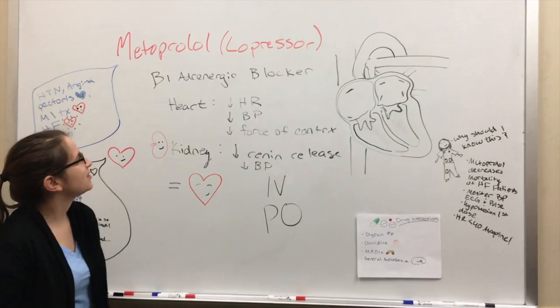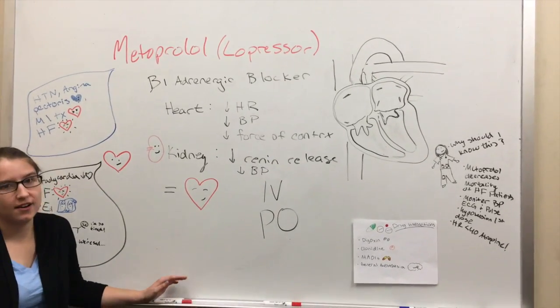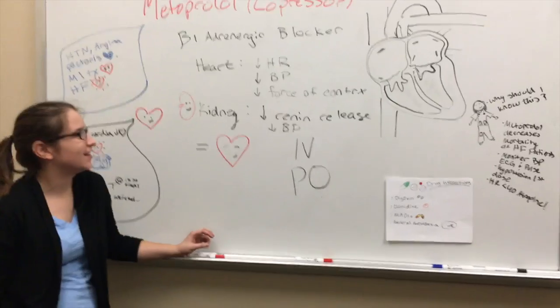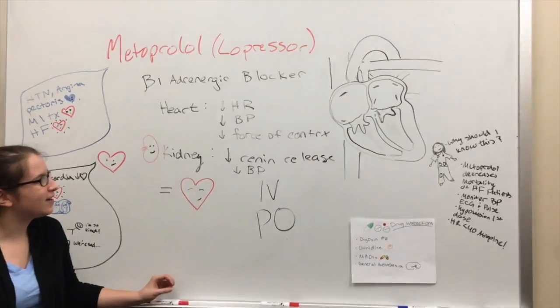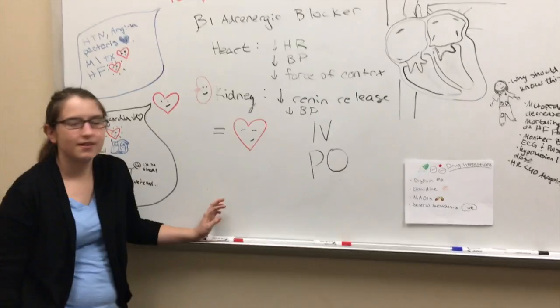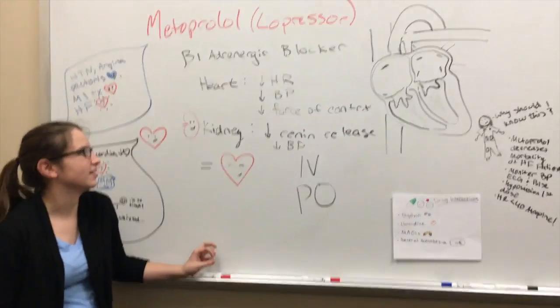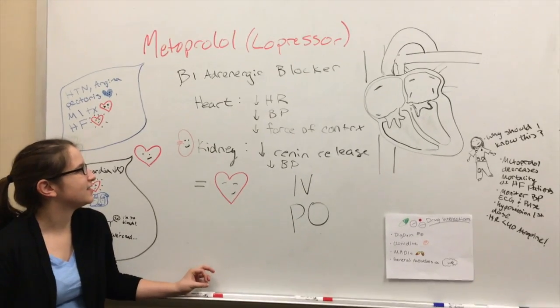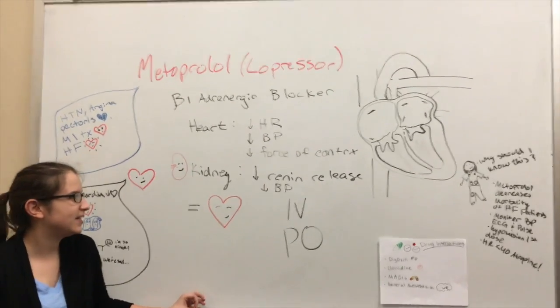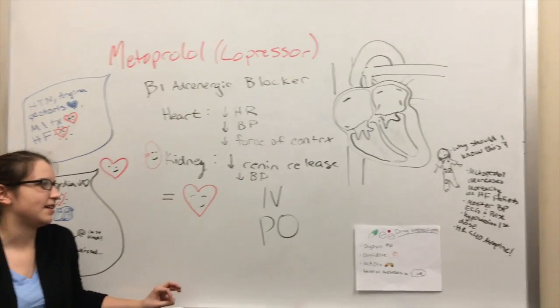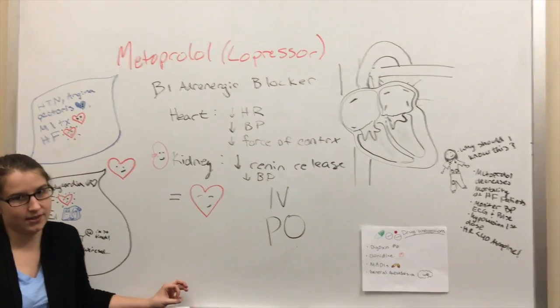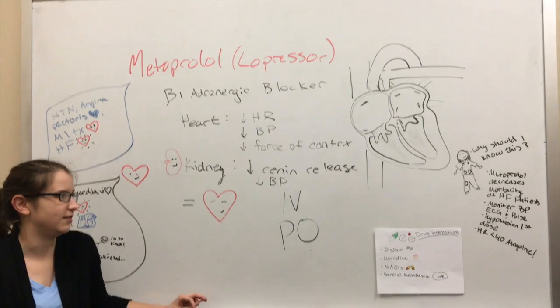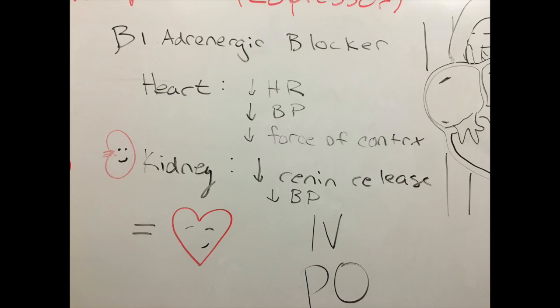Metoprolol or low presser is a beta 1 adrenergic blocker. So it affects the heart and it's going to lower heart rate, lower the blood pressure, and lower the force of contractions of the heart. So the heart's working a lot less harder. And it also has effects on the kidney. It's going to reduce renin release, which is a chemical that causes blood pressure to go up. So if we reduce that, blood pressure is going to go down. And all that makes a happy heart.